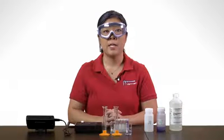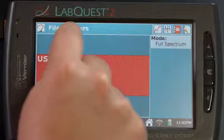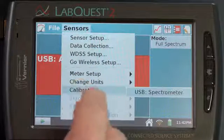On the meter screen, tap Sensors and choose Calibrate. And choose Spectrometer.